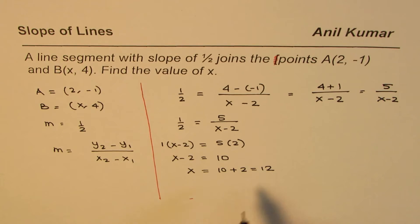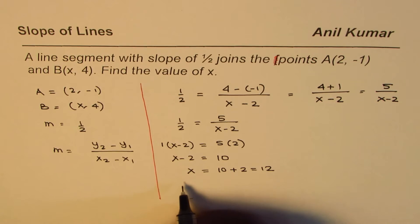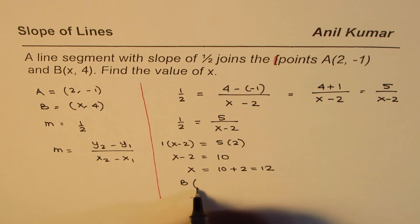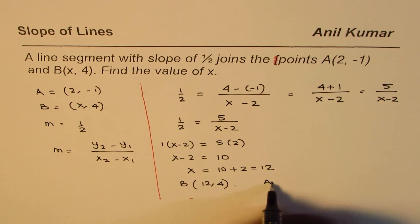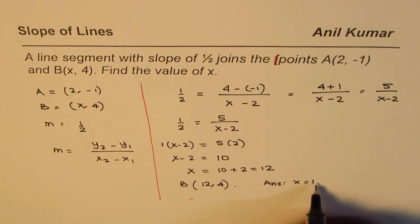So we get the value of x in this fashion. The coordinate points for B should be (12, 4). So our answer is x equals 12.